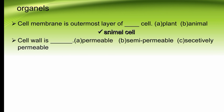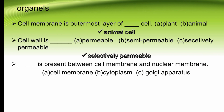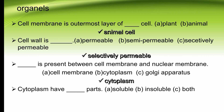Cell wall is dash — permeable, semi-permeable, or selectively permeable. The right option is selectively permeable. Dash is present between the cell membrane and nuclear membrane — cell membrane, cytoplasm, or apparatus. The right option is B, cytoplasm. Cytoplasm is present between cell membrane and nuclear membrane. Cytoplasm has dash parts — soluble parts, insoluble parts, or both. Cytoplasm has both soluble and insoluble parts. The right option is C.